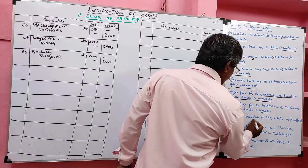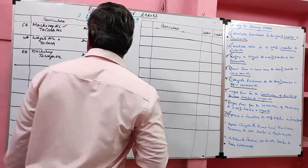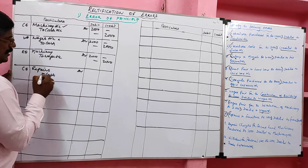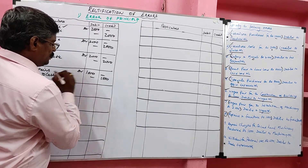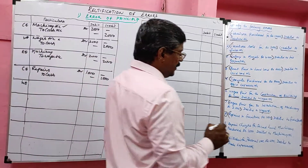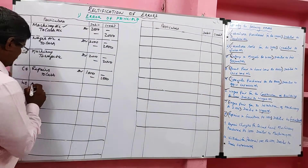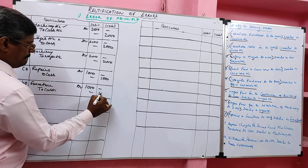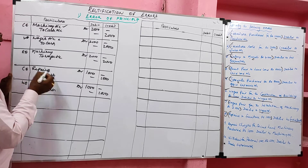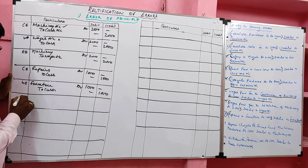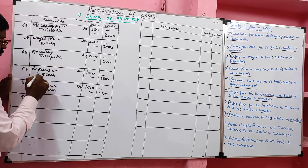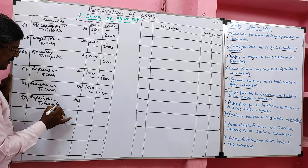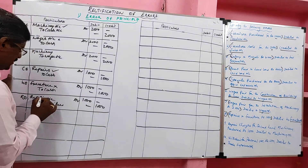Problem 8: Repair to furniture, rupees 1,000. Correct entry: repair charges account debit to cash, 1,000. Wrong entry: debit given to furniture account. Wrong entry: furniture account debit to cash, 1,000. Repair is a nominal account; furniture is a real account — instead of debiting nominal account, they debited real account. This is error of principle. Rectified entry: repair account debit to furniture account, 1,000.